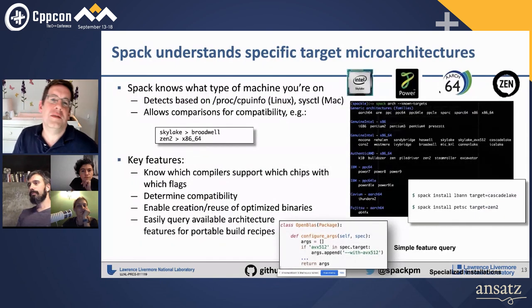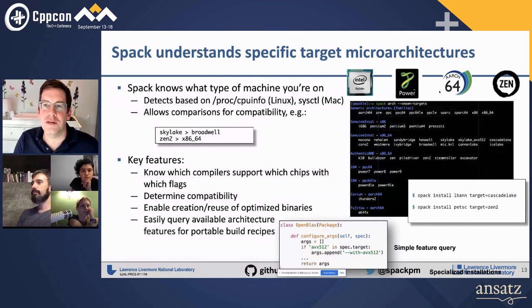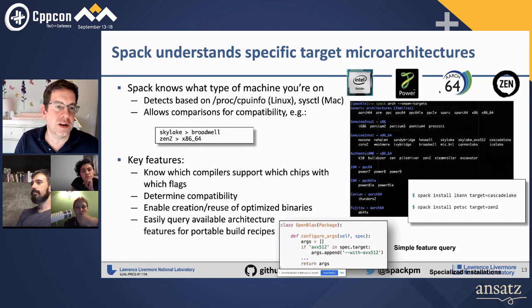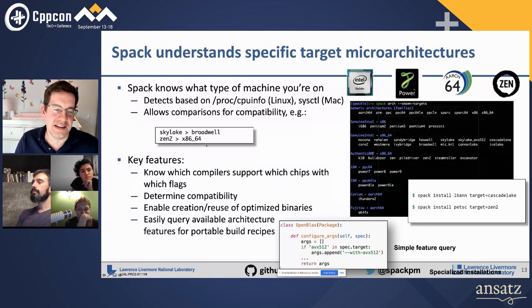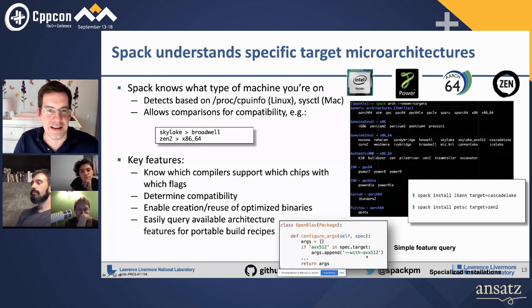We understand specific target microarchitectures. We have a separate Python library that detects what kind of machine you're on and knows the compatibility of architectures. You can do comparisons like: is Skylake compatible with Broadwell, or is Zen compatible with x86-64? You can query those things inside packages — for example, deciding whether to add the AVX-512 argument or other SIMD arguments.